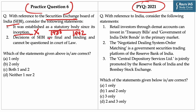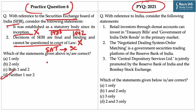Statement 2: Decisions of SEBI are final and binding and cannot be questioned in a court of law. This statement is also incorrect because the Securities Appellate Tribunal has been constituted to protect the interests of entities aggrieved by SEBI's decisions. SAT has the same powers as vested in a civil court. Further, if a person is still aggrieved by SAT's decision, he can file an appeal to the Supreme Court of India. As both statements are incorrect, option D is the right answer. Whereas PYQ is concerned, option B is the right answer.